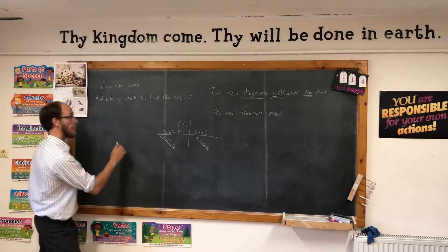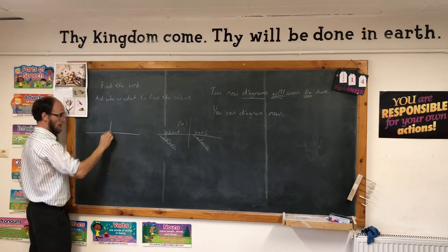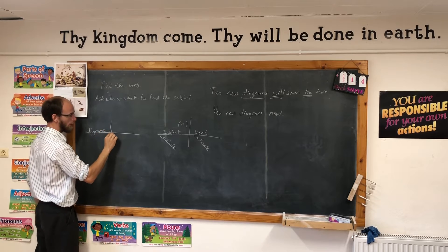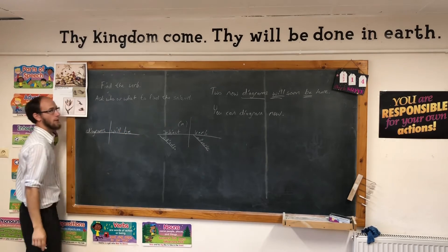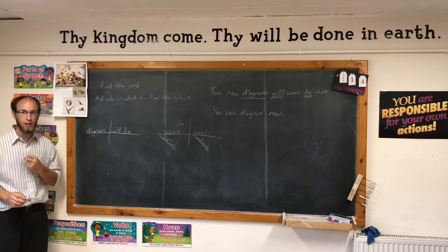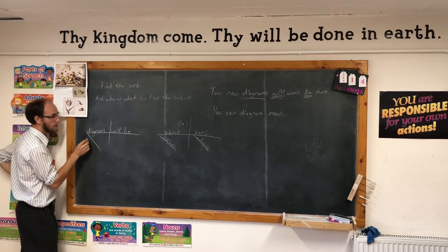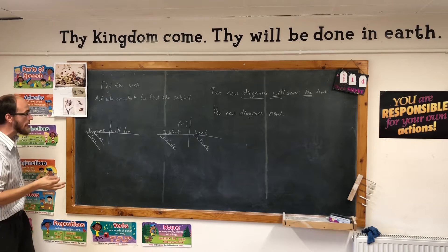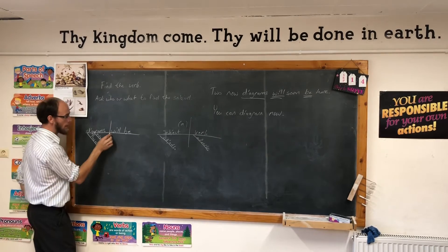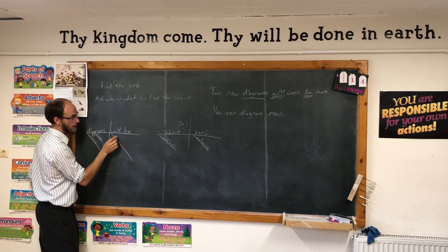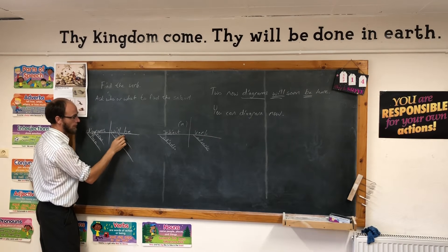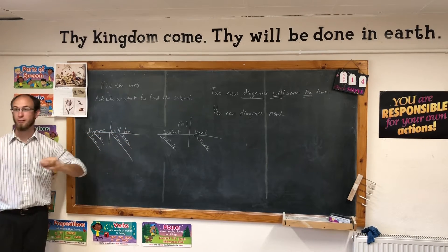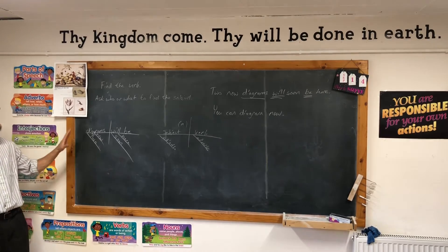Now let's diagram that one over here. Let's put the subject: diagrams. The verb: will be. Under diagrams we have two adjectives that modify diagrams — what are they? Two and new. And then there are two adverbs modifying will be — soon and here. Two new diagrams will soon be here. There's our complete sentence.